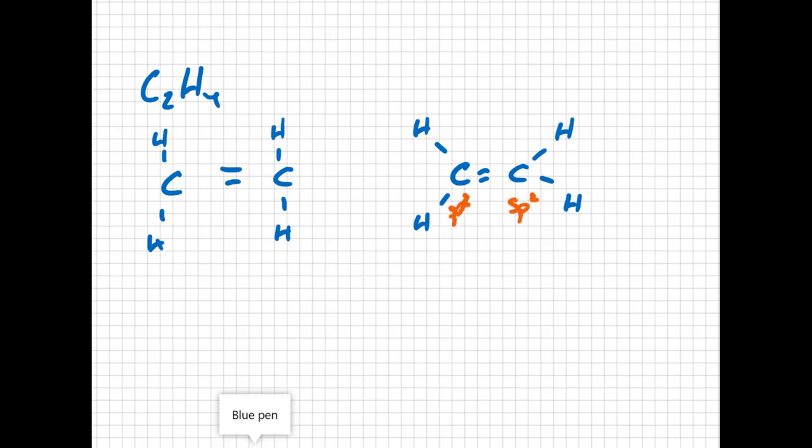One s orbital and two p orbitals blended together to make our trigonal planar shape. The third p orbital is just perpendicular to the plane here, sticking in and out of the screen.